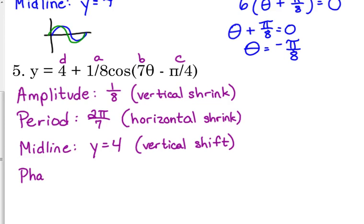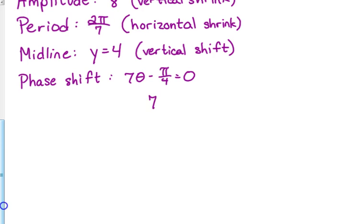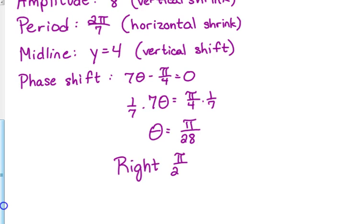And then finally, our phase shift. We set our angle equal to 0. So 7 theta minus π over 4. We set that equal to 0. I'm going to go at it from the perspective of just solving for theta here. So I'm going to add the π over 4 because it was negative. And then I'm going to multiply both sides by 1/7. It's the same thing as if we had done the factoring, which is a different way of getting there. So our phase shift is π over 28. That is positive. So our phase shift is right π over 28 because it was a positive value.